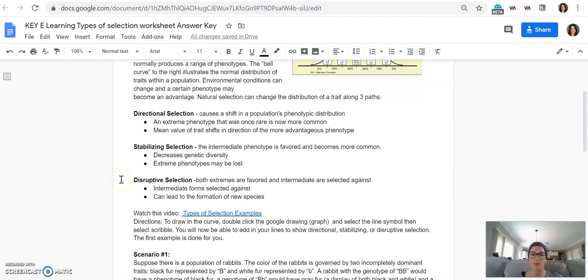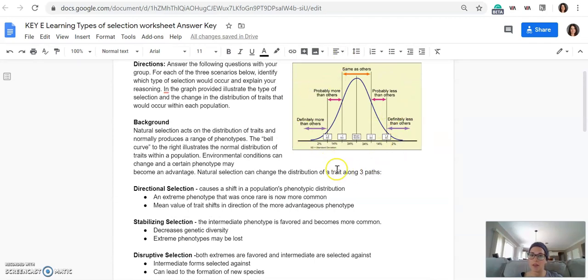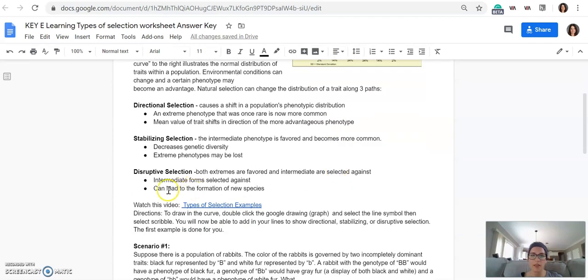Then the last, the third type, is disruptive selection. This is the opposite of stabilizing. So in this one, both extremes are favored, and the intermediate form is selected against. So this population shifts to both extremes, on the left and on the right of the histogram. So this can also lead to a formation of a new species, which is called speciation. We'll learn more about that next unit.